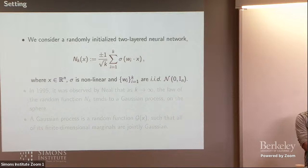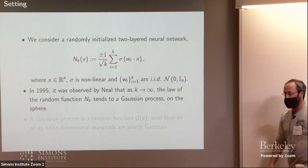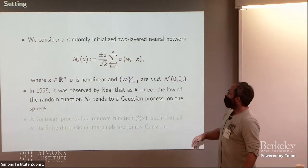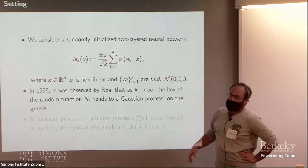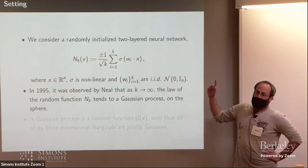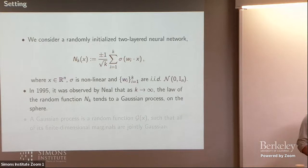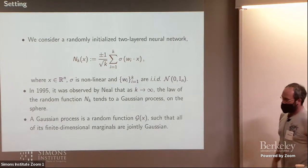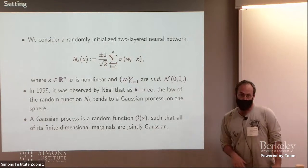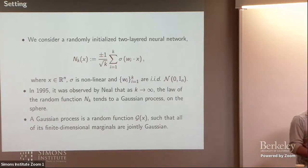So indeed, this converges to a limit in the space of functions. And this was observed in the 90s by Radford Neill. And according to Neill's CLT, as K goes to infinity, the law of this random function converges to a Gaussian process. And a Gaussian process is any random function whose finite dimensional marginals are jointly Gaussian. All right, so this is Neill's result.